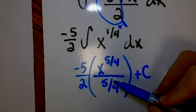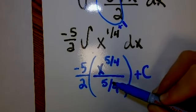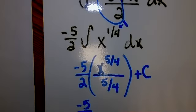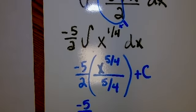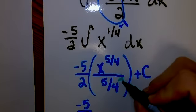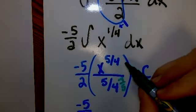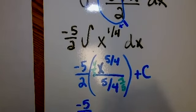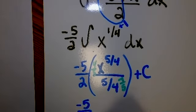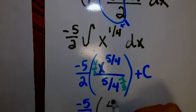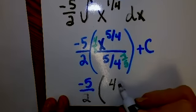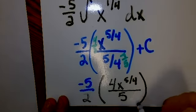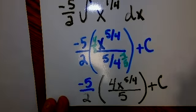All right, so just to simplify this inside piece, when I divide by a fraction, that's like multiplying by the reciprocal. So if I multiply by the reciprocal, I'll put it in green here so you can see what I'm doing. So I'm going to multiply by four-fifths, which would cancel that out. Multiply this by four-fifths. So what I'm going to end up with on the inside, this is a five-over-two, I'm going to end up with a four-x to the five-fourths over five.